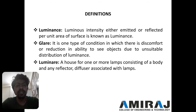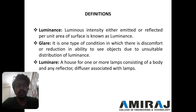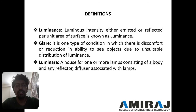Next, glare is a type of condition in which there is a discomfort or a reduction in ability to see an object due to unsuitable distribution of light or unsuitable distribution of luminance. And next is luminar — that is a housing for one or more lamps consisting of a body or any reflectors and diffusers associated with the luminar.